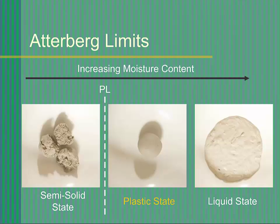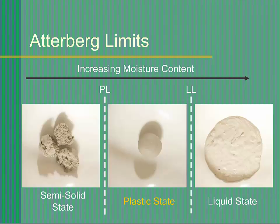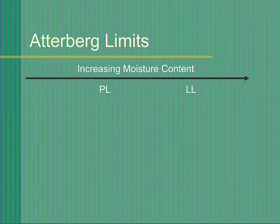When a soil has a moisture content at its liquid limit, it is at the boundary between plastic and liquid behavior. If water is removed, it will act like a plastic material that will be moldable and deformed without cracking. If water is added, it will act like a viscous liquid that can ooze and flow. The purpose of the Atterberg limits test is to determine these moisture contents in a standardized way.